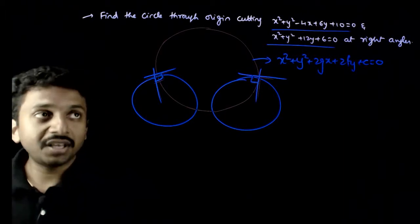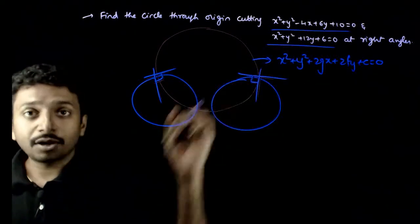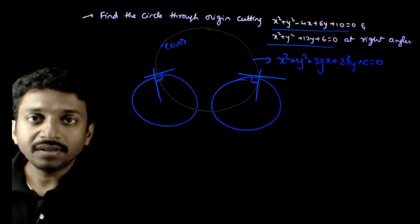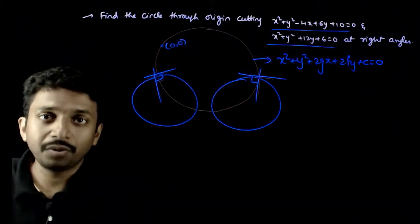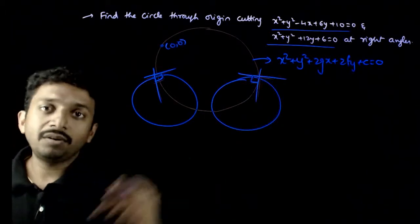Now, about this circle, what are the conditions? This circle has to cut this circle orthogonally, and also, the question states this has to pass through 0, 0. I want a circle which passes through 0, 0. Three conditions, we have three unknowns, we can find all three.